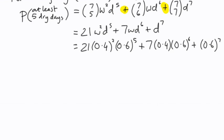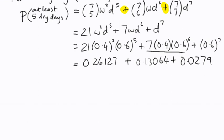We can then work out individual terms. This first term, 21 times 0.4 squared times 0.6 to the power of 5, works out as 0.26127. The second term works out as 0.13064. And the third term, 0.02799. And in total, when you add up all those three terms, we get 0.4199.